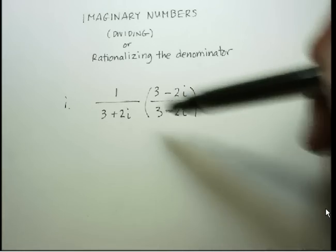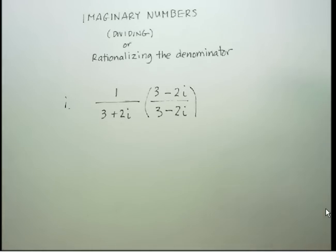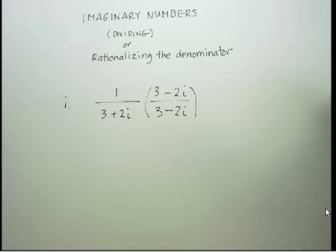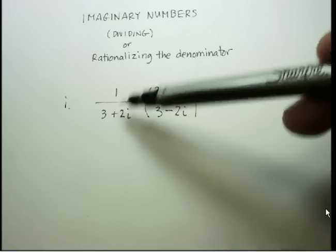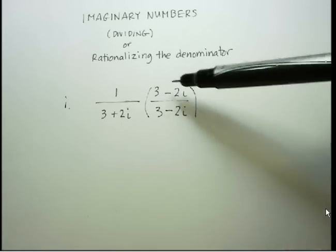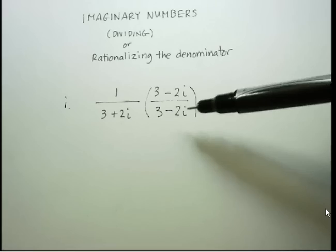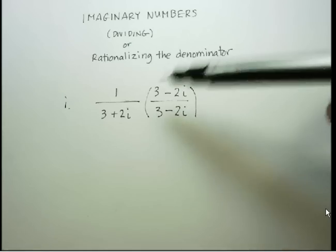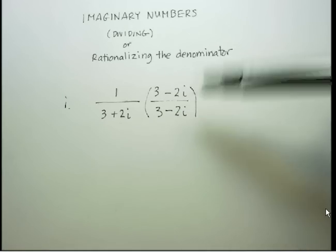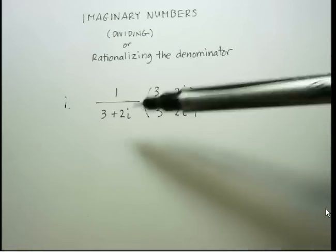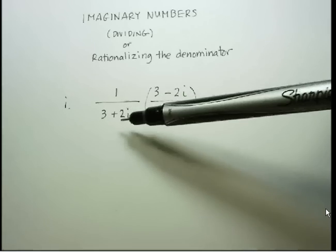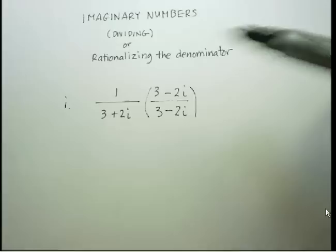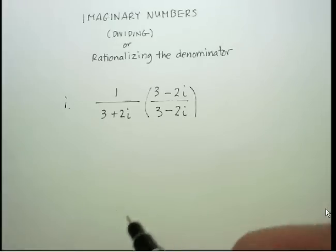So we would multiply by 3 minus 2i over 3 minus 2i, which is an expression equal to 1. I don't want to change this — I'm not solving for a variable. Multiplying by 1 doesn't change the quantity; it might change the way the expression looks, but not the quantity. What we're trying to do is get the i out of the denominator and into the numerator.